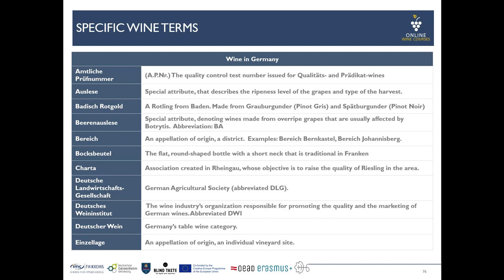Badisch Rotgold is a term worth mentioning here. It's a so-called Rotling from the area of Baden. Rotling means that you are vinifying white and red grapes together to get in the end something color-like comparable to a rosé. Typically for Baden, it is made from Grauburgunder (Pinot Gris) and Spätburgunder (Pinot Noir) grapes.